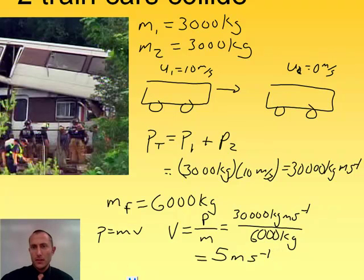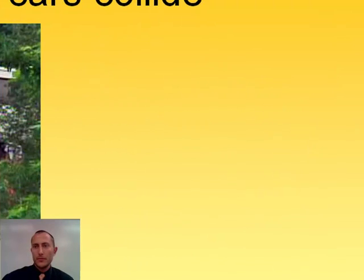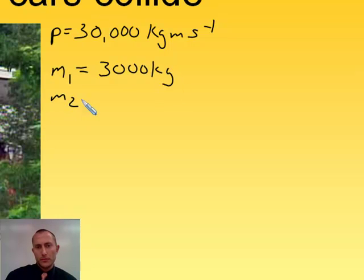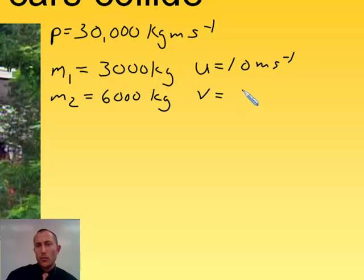Well let's look at the initial kinetic energy and compare it to the final kinetic energy of this system. Again, let's rewrite what we had. We have our momentum, remember before and after, is 30,000 kilogram meters per second. Our m1 is just the mass of the one moving car, which is 3,000 kilograms. Our m2 is double that, it's 6,000. Our initial velocity was 10 meters per second and our final velocity was 5 meters per second. So now let's compare the initial and final kinetic energies.